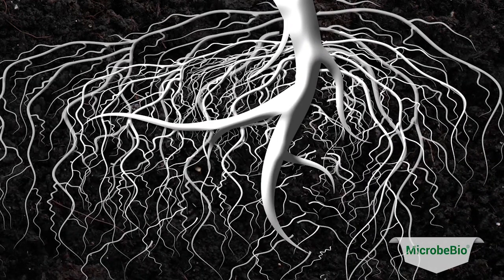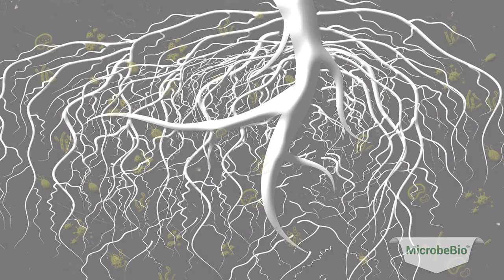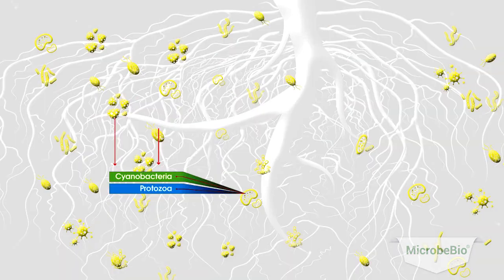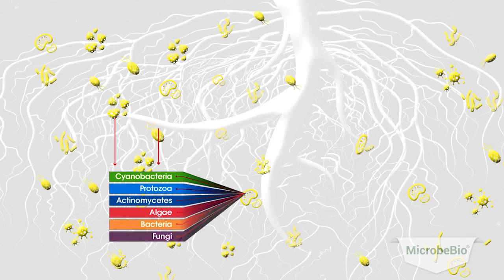Plant roots act as a feeding unit to the diverse living microorganisms found within the soil, such as cyanobacteria, protozoa, actinomycetes, algae, bacteria, and fungi. These microbes interact harmoniously with one another, forming complex networks.